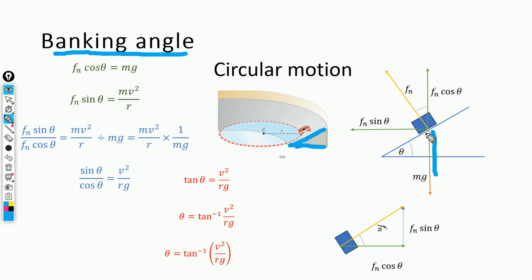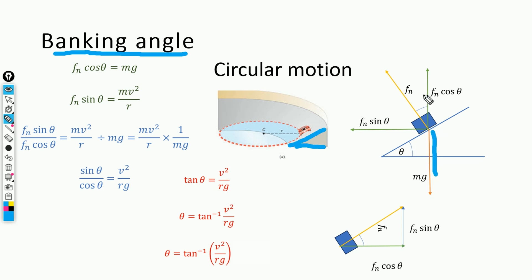A reaction force acts perpendicular to the road, known as the normal force, which balances the weight of the car, denoted by FN. This is the horizontal axis and this is the vertical axis; the weight mg acts downward along the vertical axis.